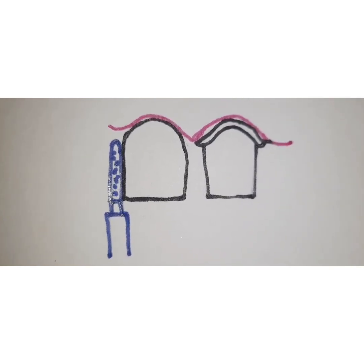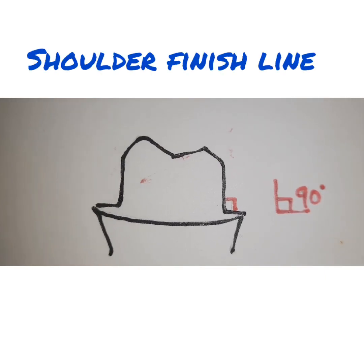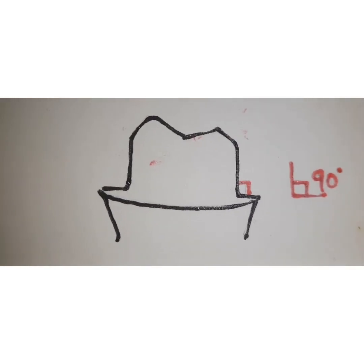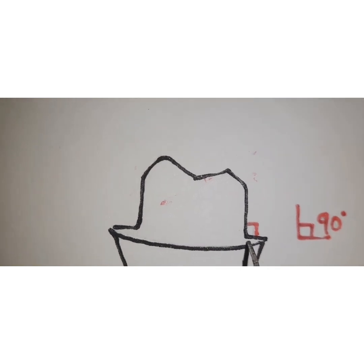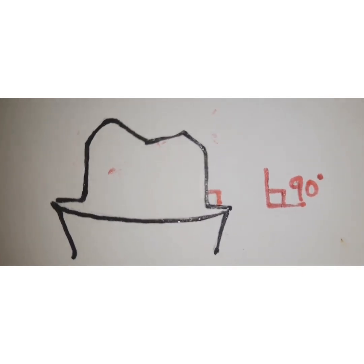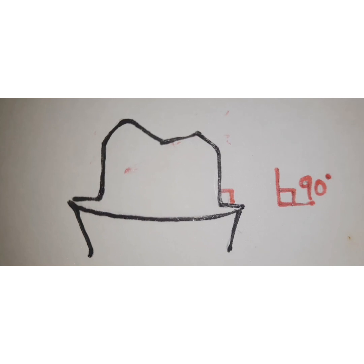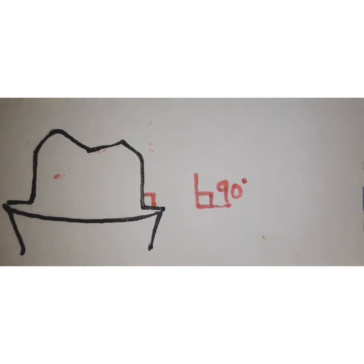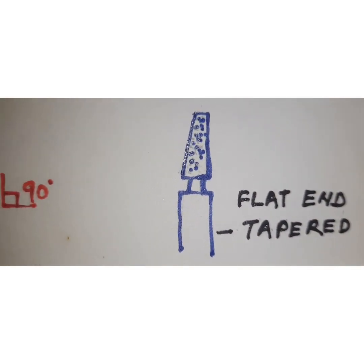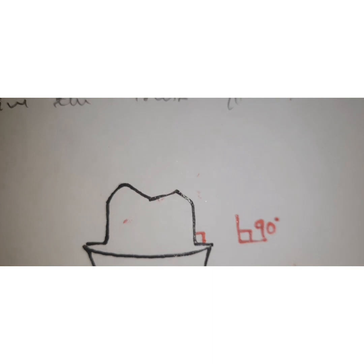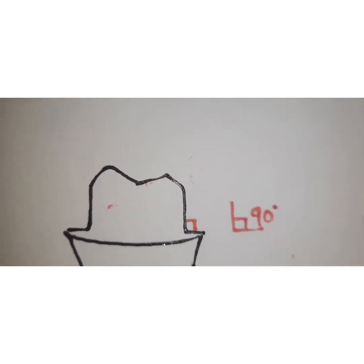The first type is the shoulder finish line. A shoulder finish line is formed when the external line angle of the preparation is perpendicular to the long axis of the tooth, making a butt joint or 90-degree angle. It should have a width of around 1.2 to 1.5 millimeters, and you use a flat-end tapered diamond bur, keeping the flat end perpendicular to the plane of the preparation in order to form a shoulder finish line.